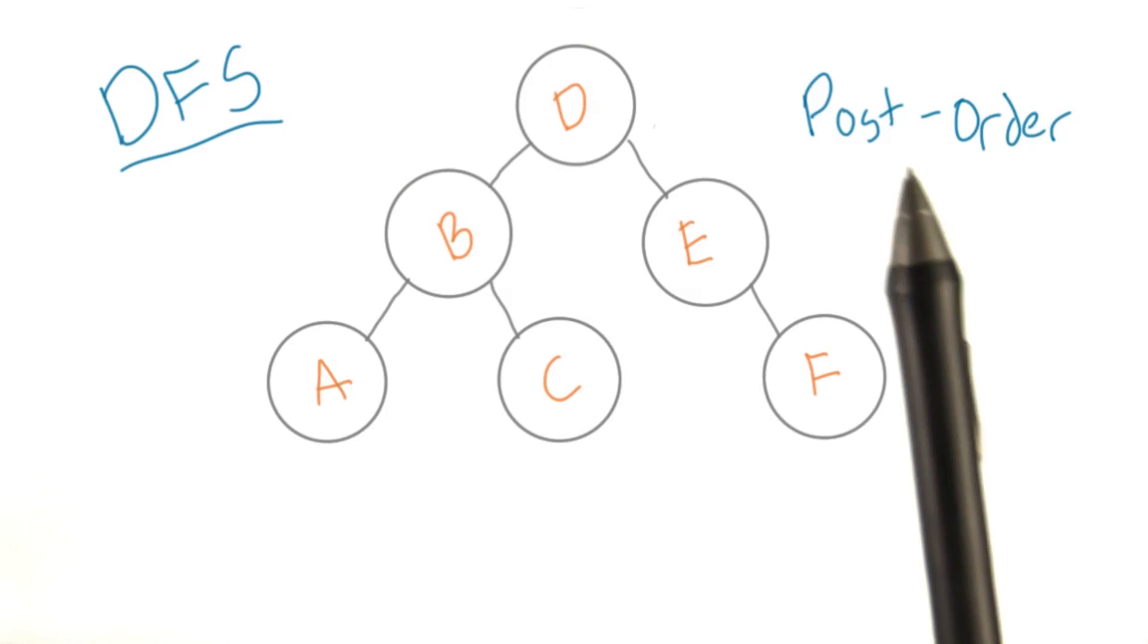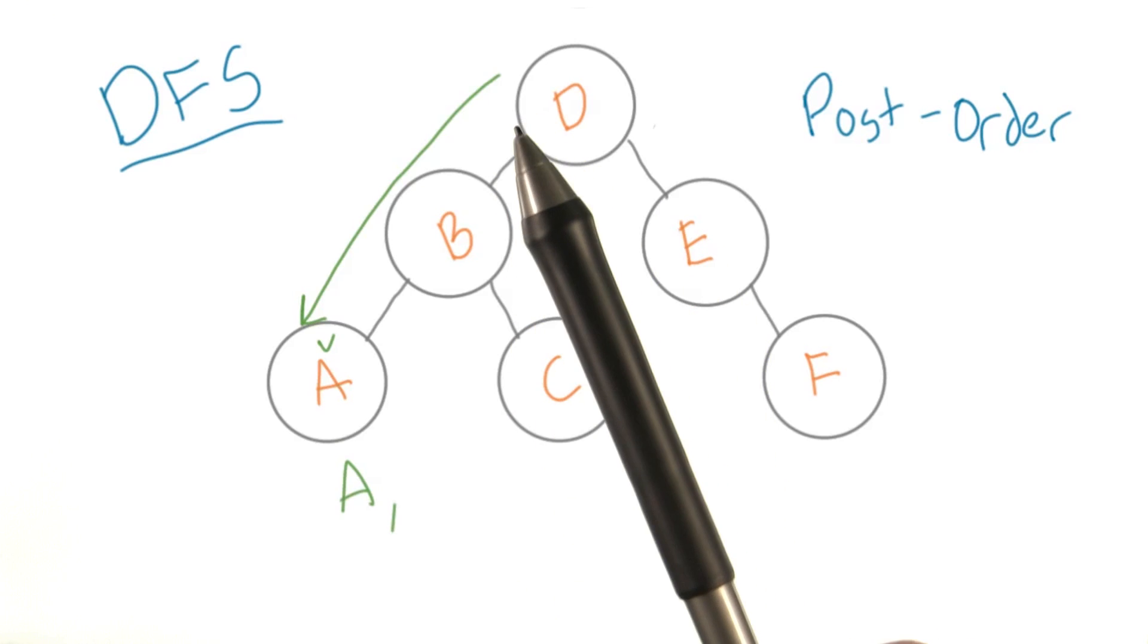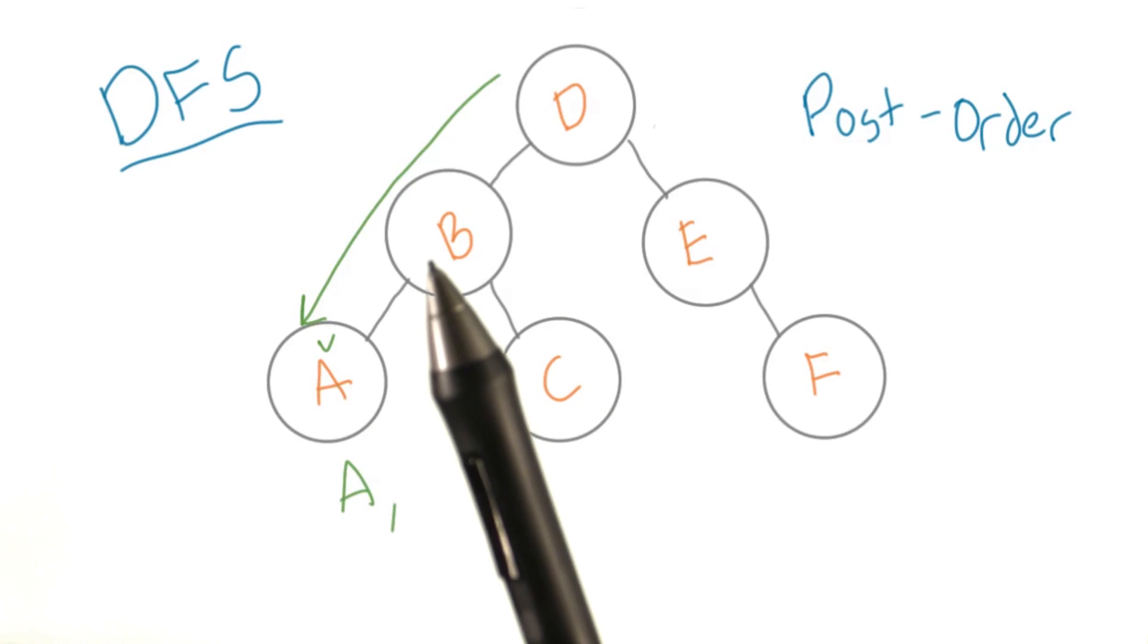Lastly, we have the post-order traversal. This time, we won't be able to check off a node until we've seen all of its descendants, or we visited both of its children and returned. Similar steps: we begin at the root, don't check it off, but continue down to a leaf. We check off the leaf and move to the parent.